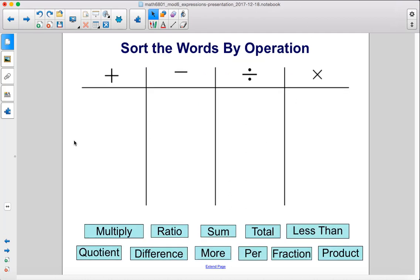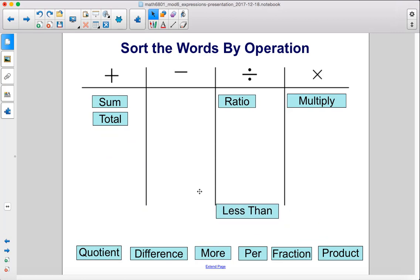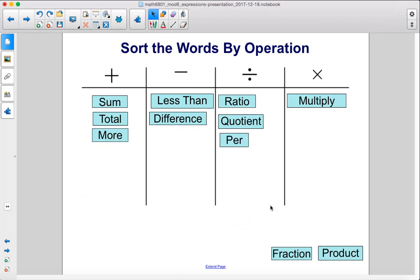Sort the words by operation. Multiply, well that's multiplication. Ratio between two numbers, that's division. Sum of two numbers, that'll be addition. The total will be addition. Less than is subtraction. Quotient is division. Difference is subtraction. More will be addition. Per is division. Fraction is also division. And product is multiplication.